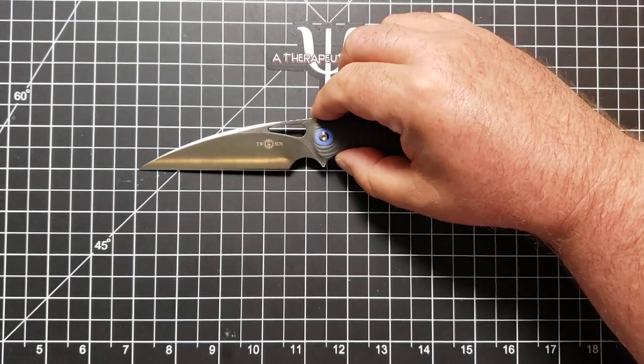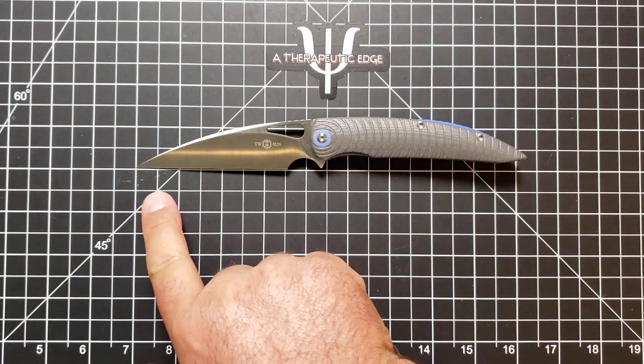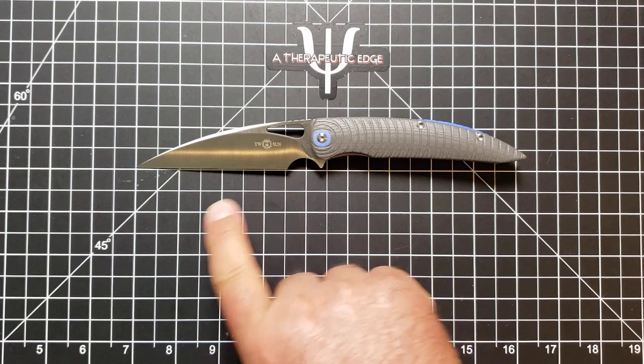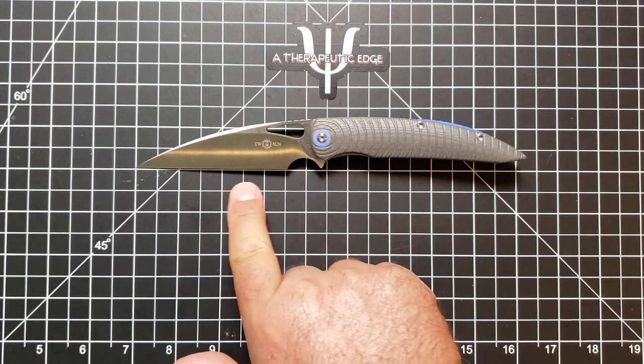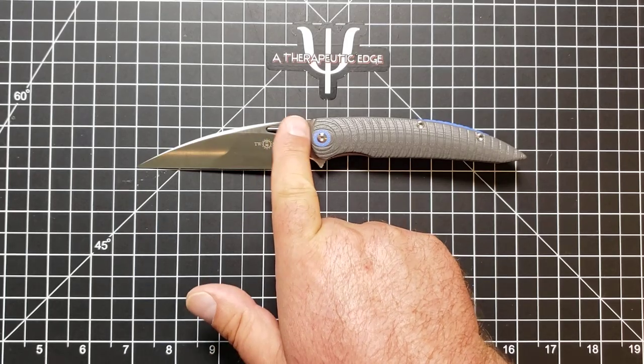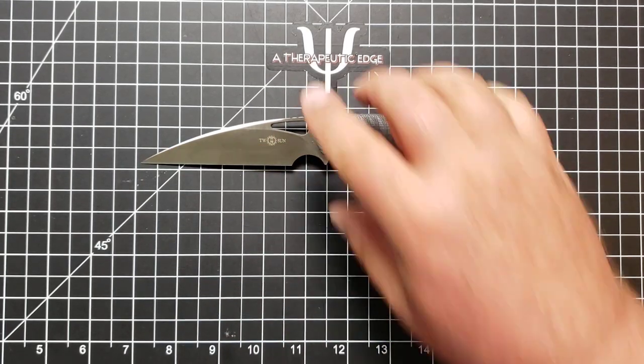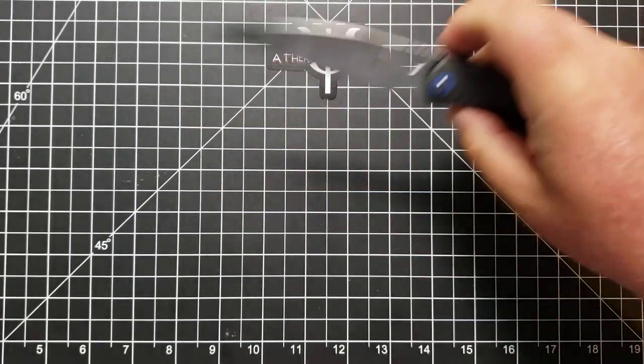On the TS-116, let me line that up where we need it to be, you get 3 and a half inches of cutting on 3 and 3 quarters inches of 14C28N. I love this choil. It is really well done.